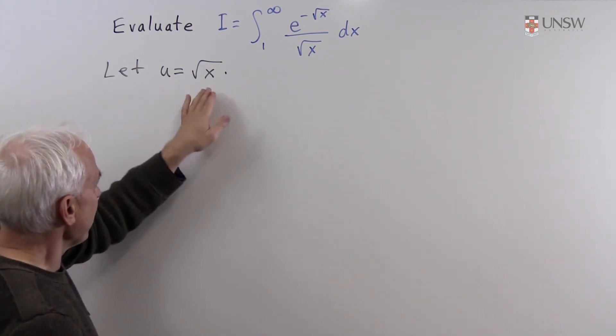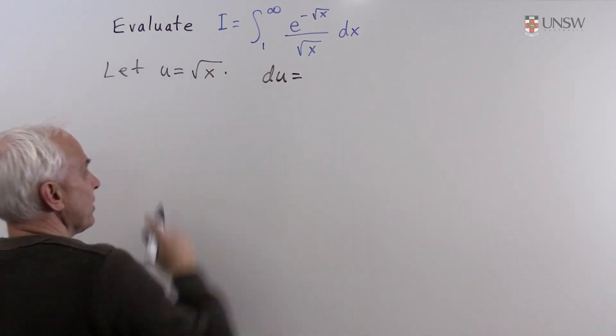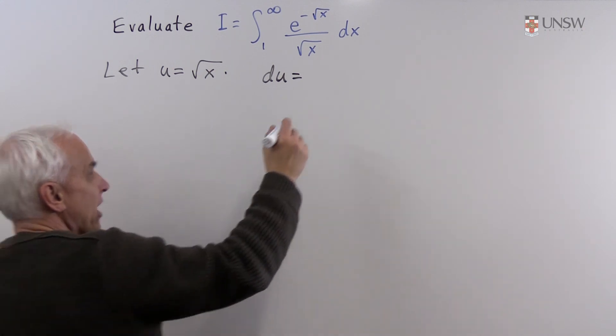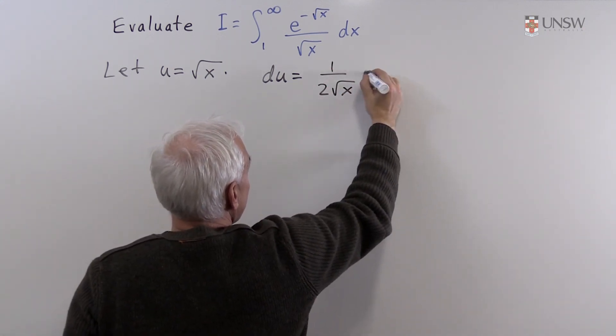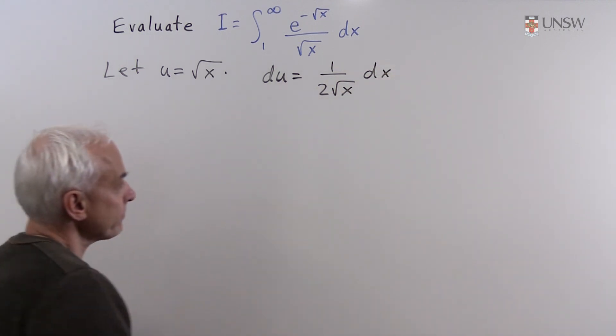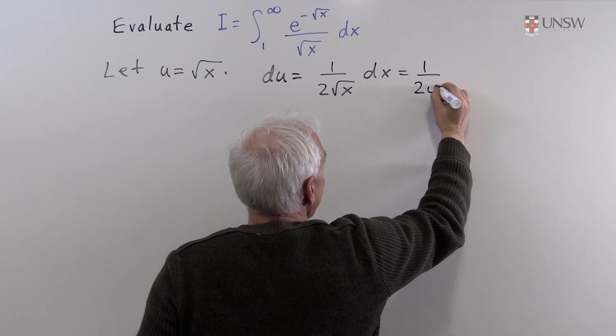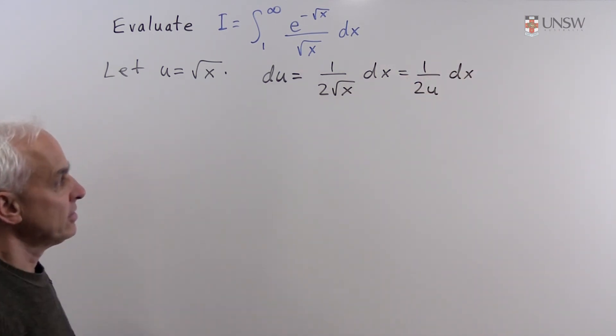Let's get that first, let's differentiate this. du equals, take the derivative of x to the half, we get one half x to the minus a half, so that's one over two root x dx. And we can write that as one over two u dx, because root x is in fact u.